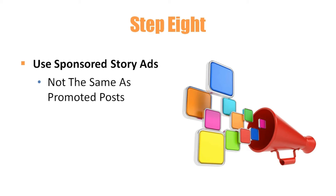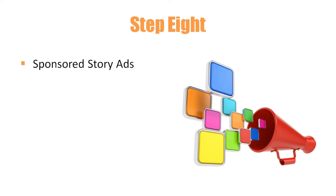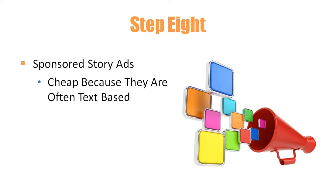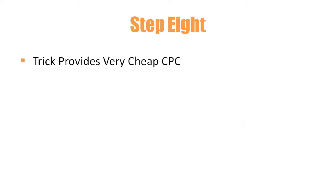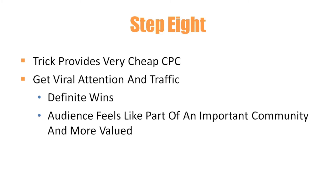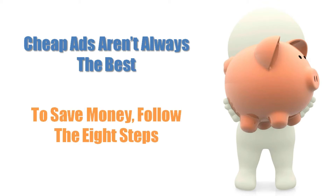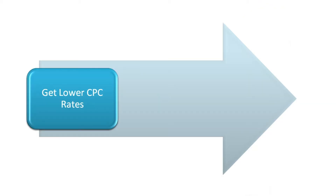Step 8: Use sponsored story ads. These are not the same as promoted posts — these are ads made from your posts and placed on sidebars. Sponsored story ads are cheap because they are often text-based, but they can bring in a lot of traffic to your page directly. This little trick provides a very cheap CPC, and you also get viral attention and traffic. These are definite wins for you, and your audience feels like it is part of an important community.